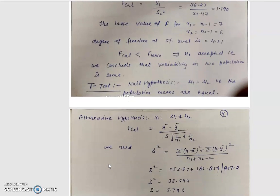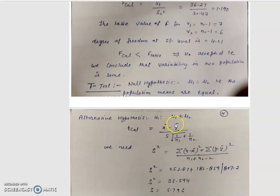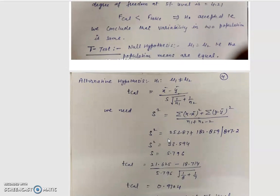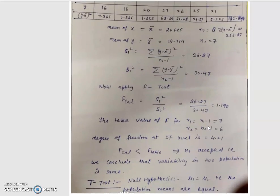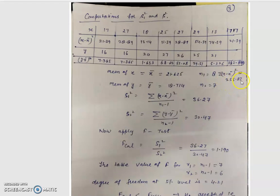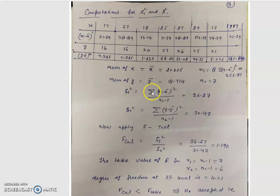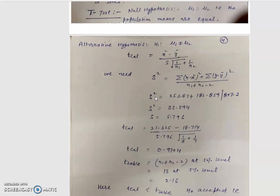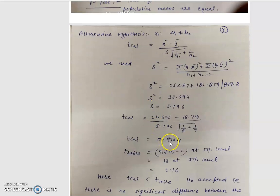Now to verify that the means of these two populations are the same or not, we apply the T test. The null hypothesis is mu1 equals mu2, that is, population means are equal. The alternative hypothesis is mu1 does not equal mu2. T calculated equals (x-bar minus y-bar) upon capital S times the square root of (1/n1 plus 1/n2). We have sigma (x minus x-bar)² equal to 253.87, sigma (y minus y-bar)² equal to 182.85, x-bar is 21.625, and y-bar is 18.714. Substituting these values, T calculated is 0.9704.